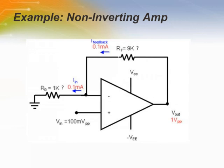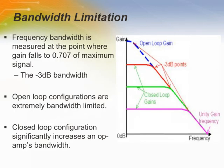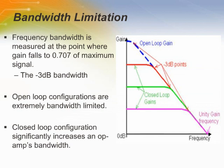Bandwidth is a very important parameter of op-amps. Frequency bandwidth is measured at the point where the op-amp gain falls to 0.707 (or 1 over the square root of 2) of its maximum value. This point is referred to as the negative 3 decibel point. The open-loop configuration has a higher DC gain; however, it is extremely bandwidth limited, meaning the gain starts rolling off at only a few hertz.